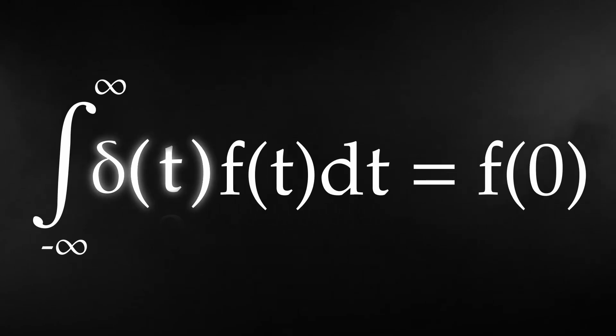Specifically, when you multiply a function by the delta function and then take the integral, you get back the original function to evaluate at zero. At least, as long as the bounds contain zero, otherwise it's just zero.